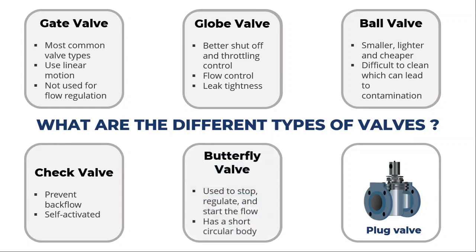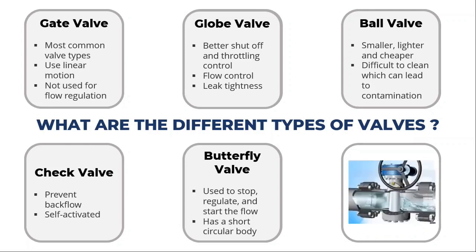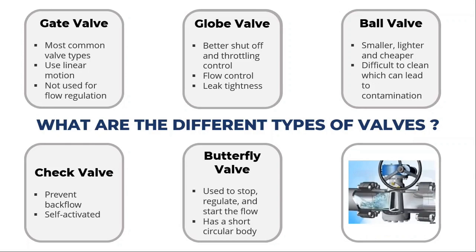A butterfly valve is a rotary motion valve with a quarter turn that is used to control, stop, and start the flow of fluid. The body of the butterfly valve is short and round. It's an excellent choice for large valve applications because of its lightweight compact design, which takes up much less room than other valves.